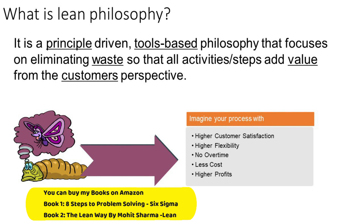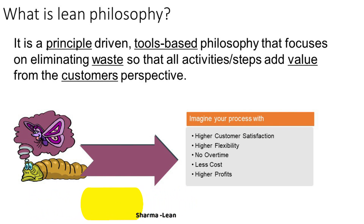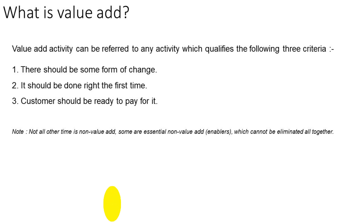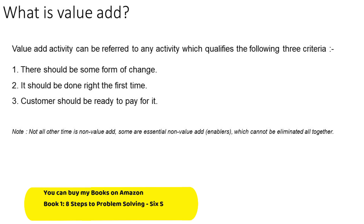Thinking that giving extra would make the customer happy actually resulted in customer dissatisfaction. The table came back to the shop, you repaired it — that is rework cost not paid by the customer — and then sent it back, and the customer accepted the table. This example tells us we need to understand what the customer wants and deliver exactly that. Any activity or step that brings a change in the shape or form of a product is a value-added activity; if not, it is not a value-added activity.